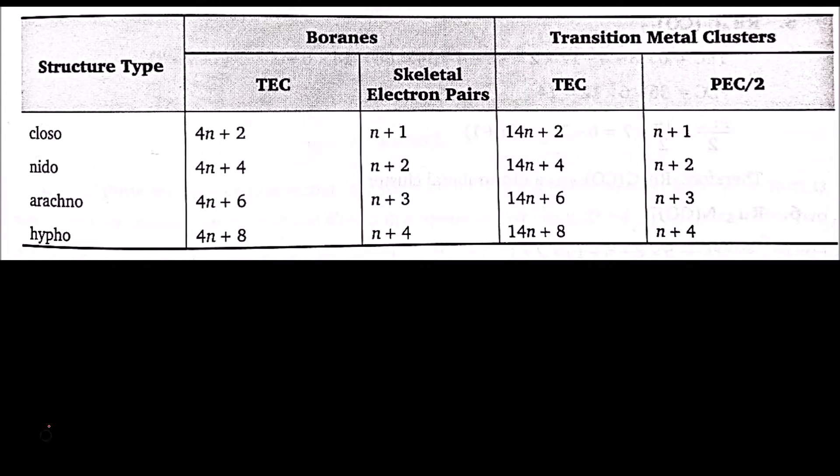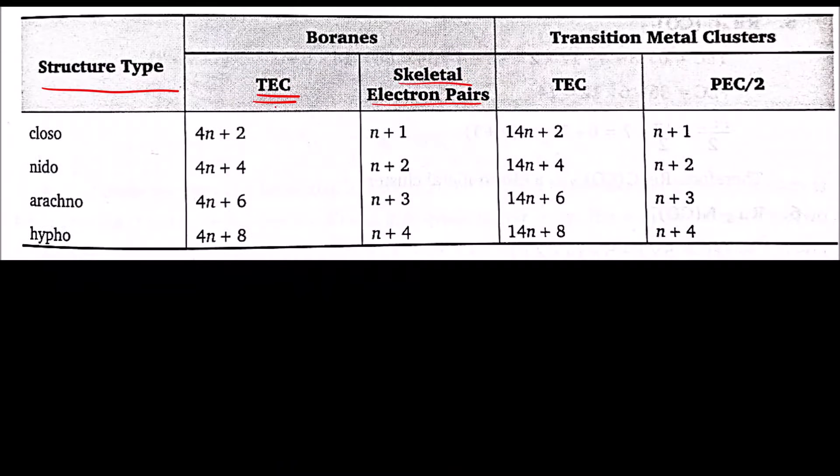This is the table that we have to follow. This is the structure type that we will find out, and this is the total electron count and SEP - the skeletal electron pairs. We have to calculate whether it is closo, nido, arachno or hypo. For transition metal clusters, the only difference is here it is 4N; instead of 4, if you add 14, you will get it for the metal clusters.